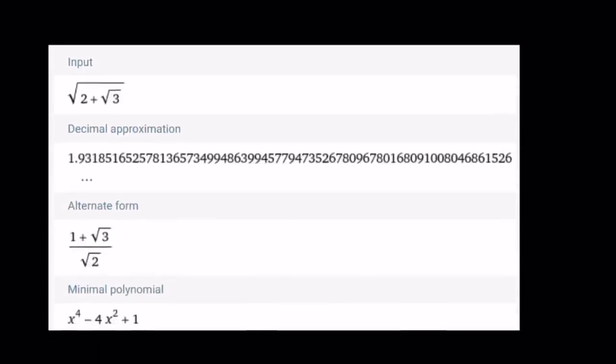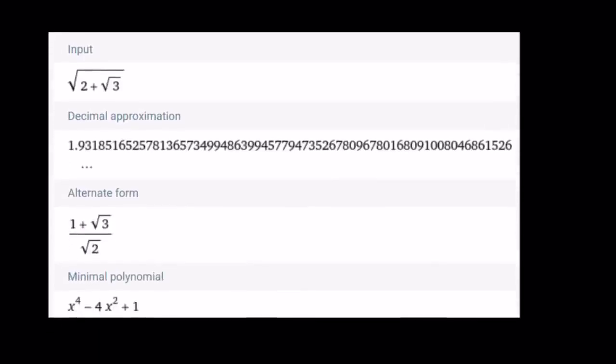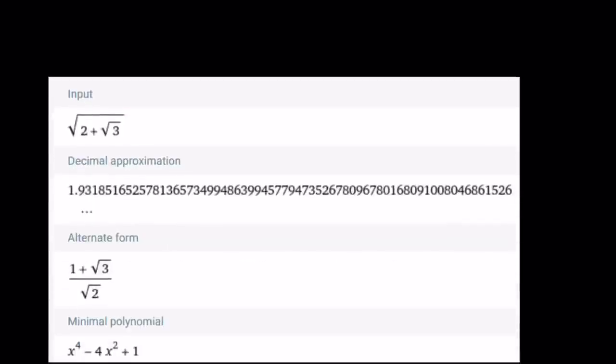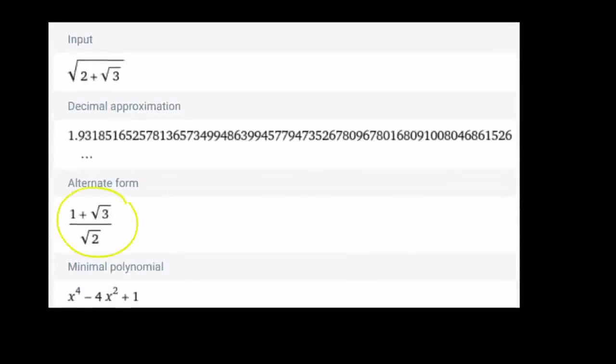But first, let's take a look at the Wolfram Alpha output as well. We have our input, the decimal approximation, as you saw here. This is much better, obviously. And the alternate form, if you rationalize, you're going to get the answer. And minimal polynomial, I hope you know what that means. If you don't, please comment and someone will answer that. Let's go ahead and talk about the third method.